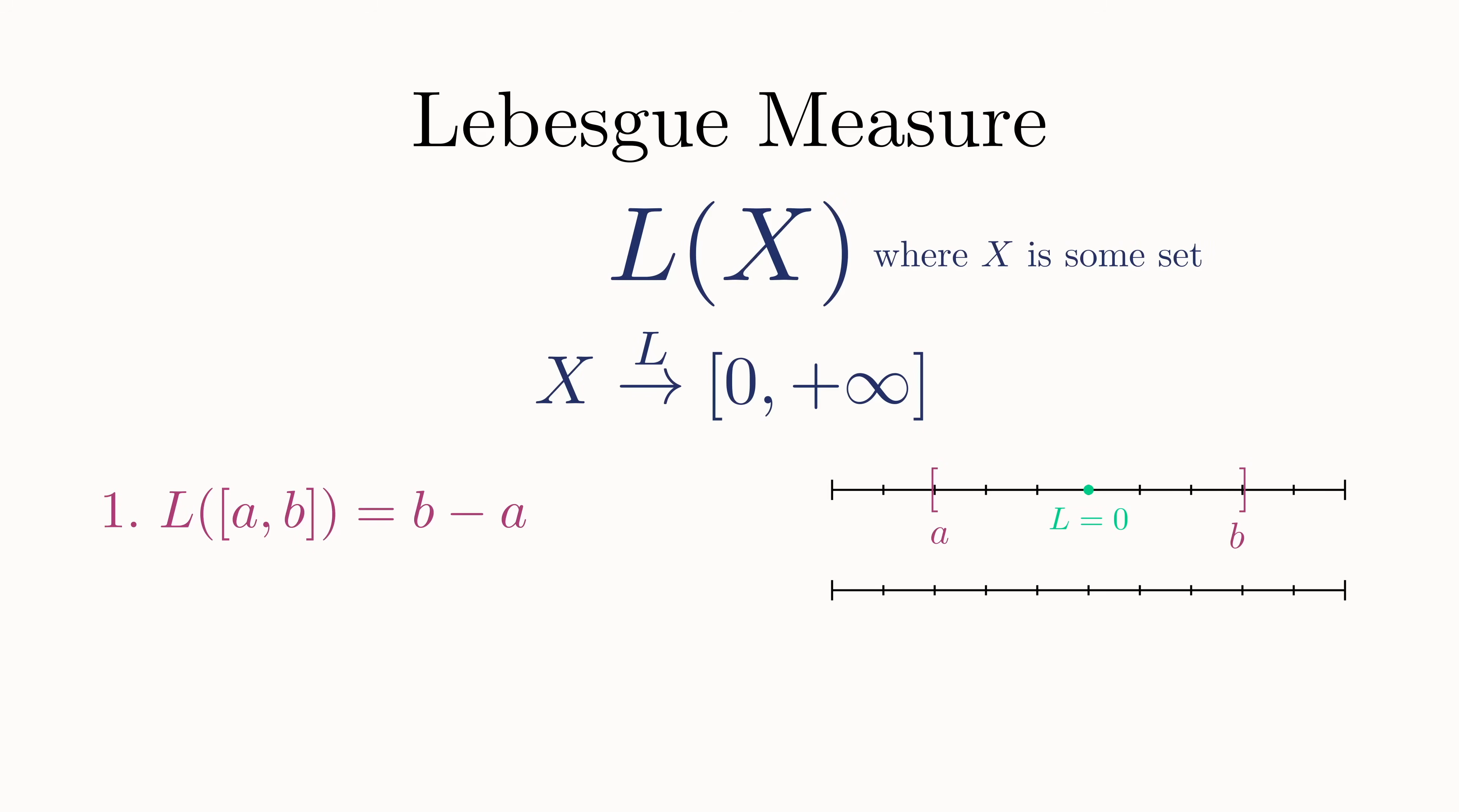Next, if the length of this interval is 3, and we slide it across the number line in any direction, then the length should remain the same. The technical term for this is translation invariance, and it's typically written like this.